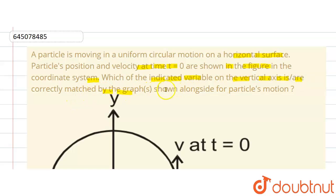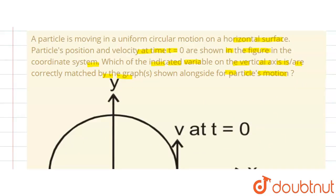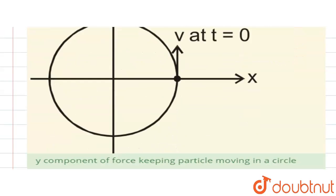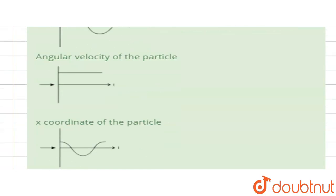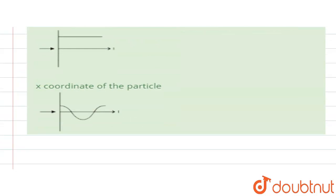by the graph shown alongside for particle motion? So here this is a uniform circular motion and this graph is given. Now we have to check which one is right.